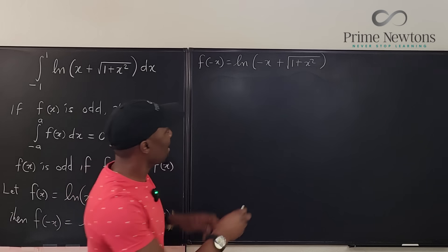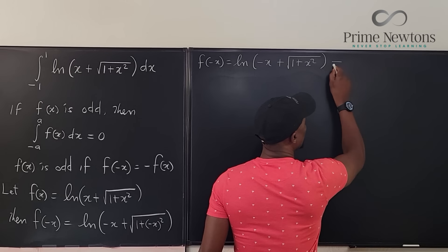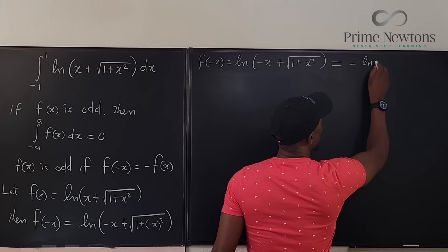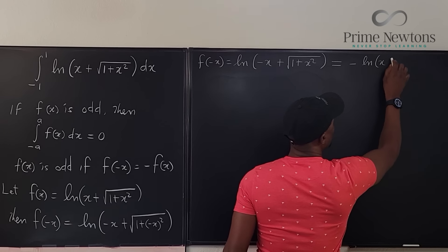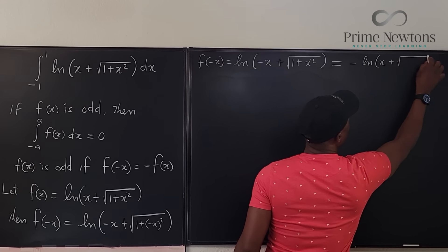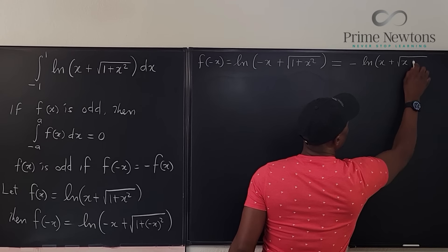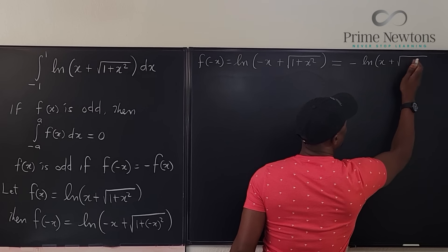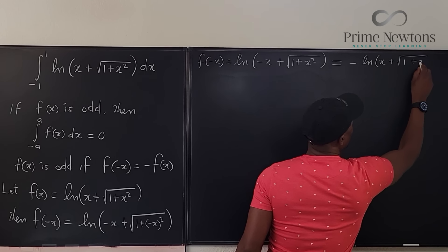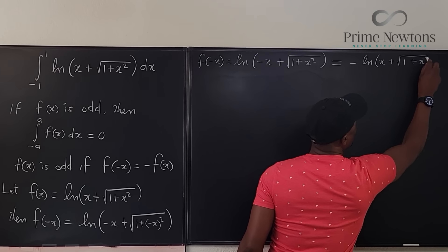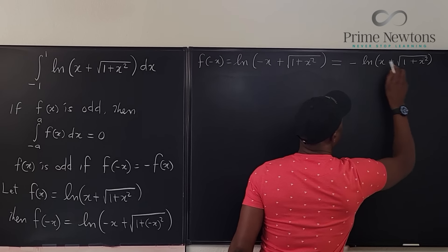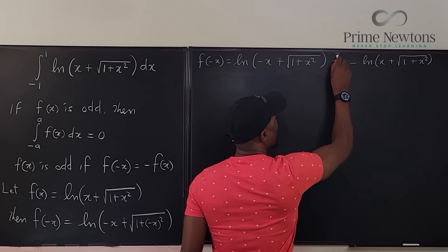It doesn't make any sense. Is it possible that this is the same thing as negative natural log of x plus the square root of 1 plus x squared? I'm going to put a question mark here.